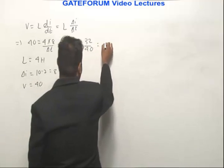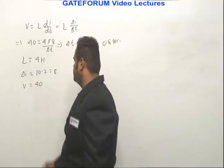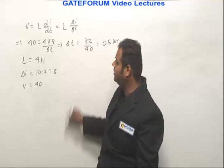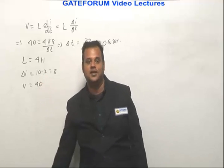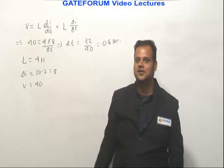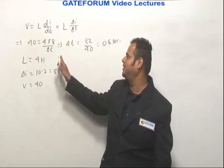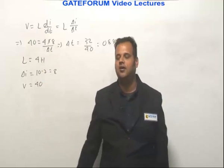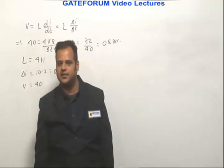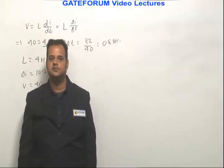Calculating 32/40 gives 0.8 seconds. So the interval Δt during which the current changes from 10 to 2 amperes is 0.8 seconds. Since the starting point is 0, t = 0.8 seconds, which is option D — D is the right answer.